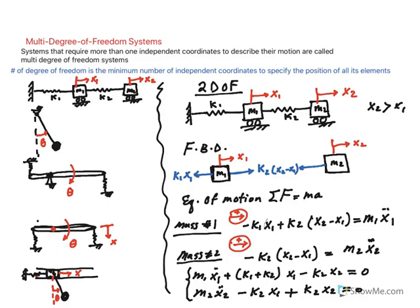Hello everybody, I'm here with a new topic related to multi-degree of freedom systems as it relates to vibrating systems. First of all, what is the definition of a multi-degree freedom system? Systems that require more than one independent coordinate to describe the motion are called multi-degree freedom systems.